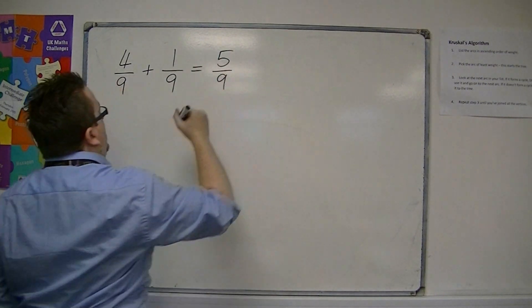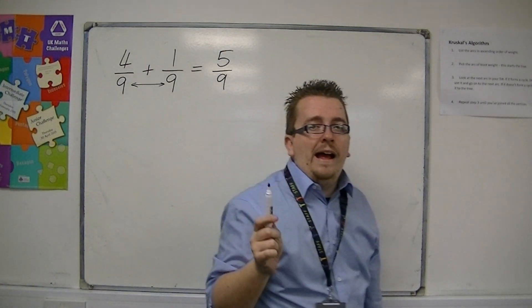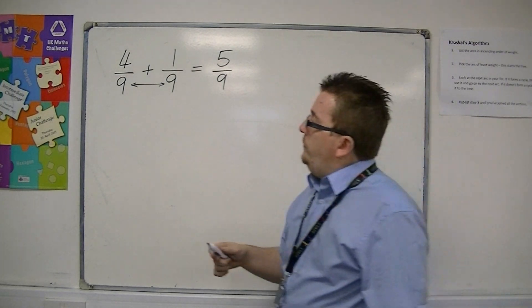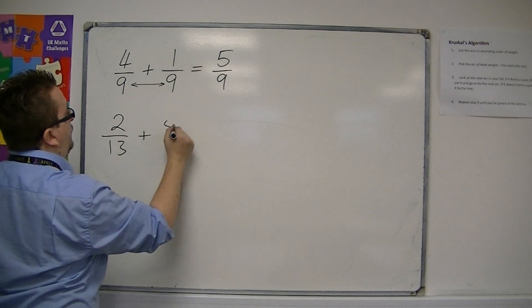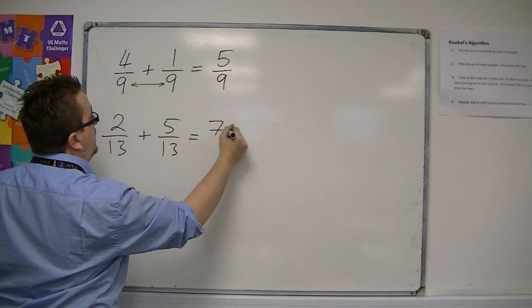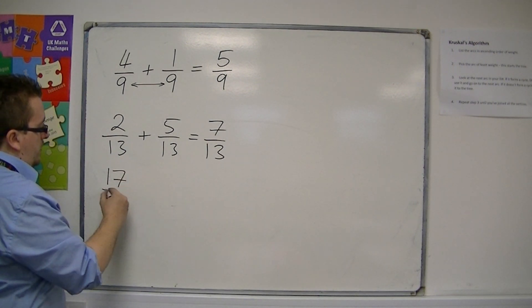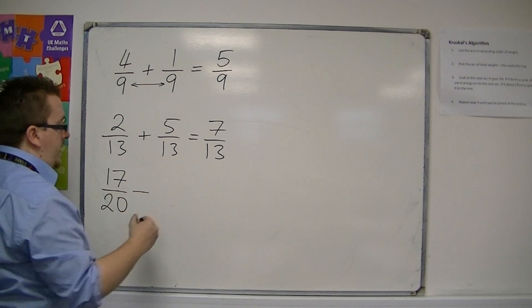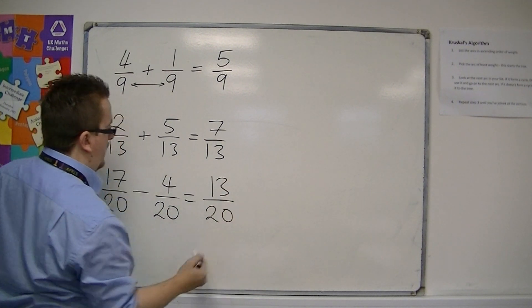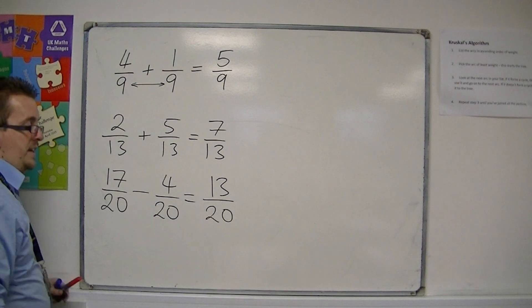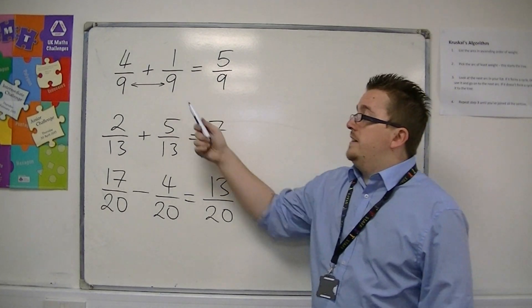So this means that if the denominators are the same, then you can just add the numerators, add the tops. So this allows us to do something like 2 thirteenths plus 5 thirteenths would be 7 thirteenths. Or 17 twentieths take away 4 twentieths is 13 twentieths. So you can add and subtract fractions very easily when the denominators are the same.